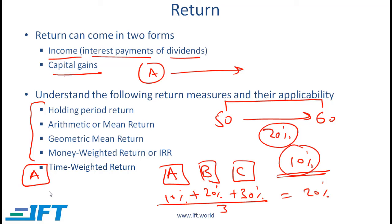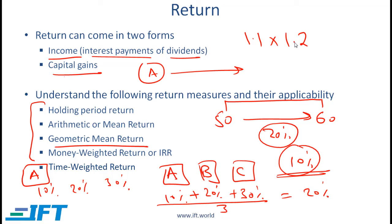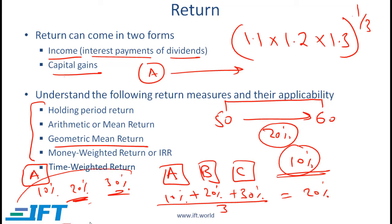Geometric mean is useful when you are looking at time series data. If stock A had returns of 10%, 20%, and 30% over the last three years, the geometric mean is calculated as: (1.1 × 1.2 × 1.3) raised to the power of 1/3, where 3 is the number of years. Generally, for time series data or to evaluate the annualized return over time, we use the geometric mean.